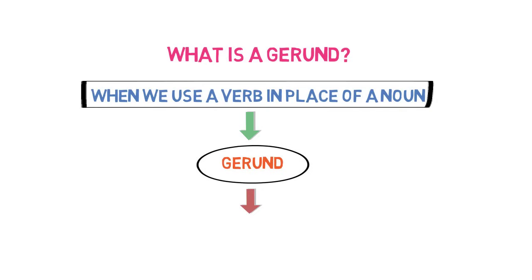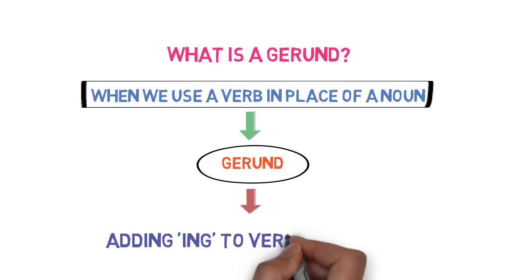Now, how we can form a gerund? We add ing with verb's first form and use it as a noun.